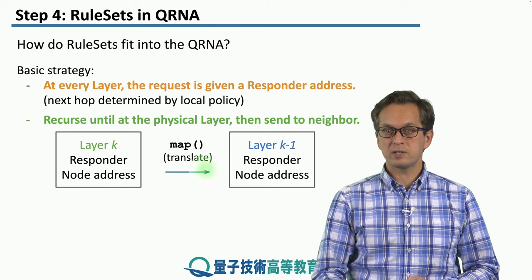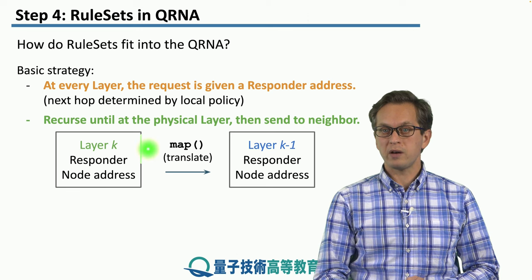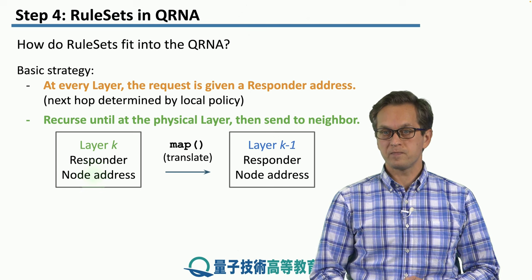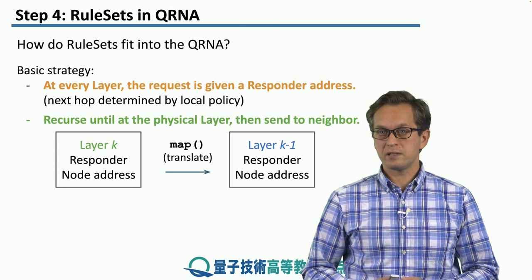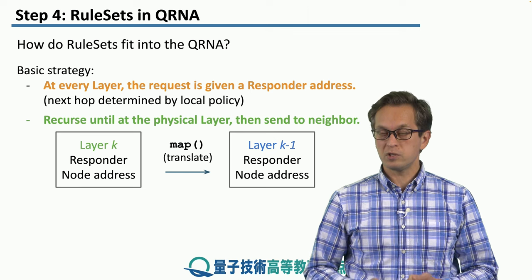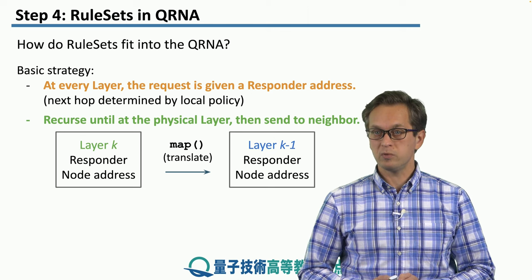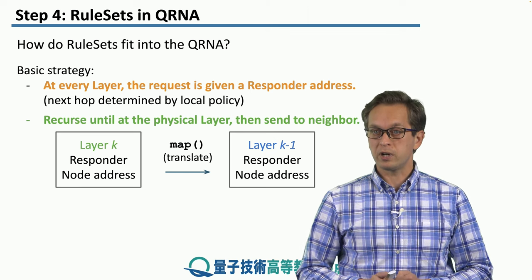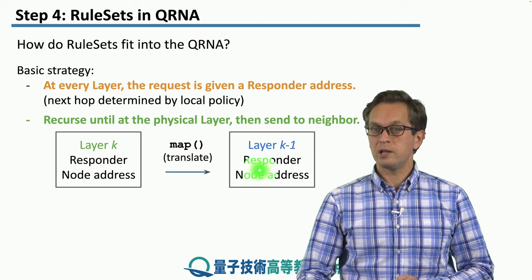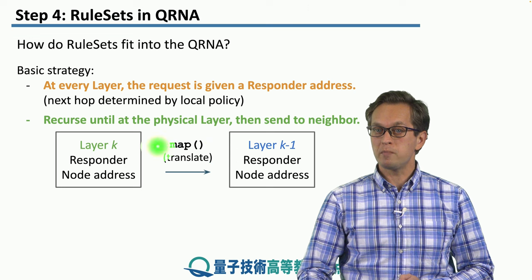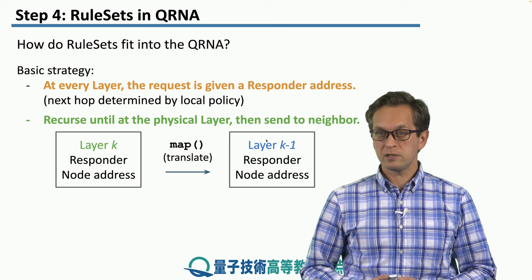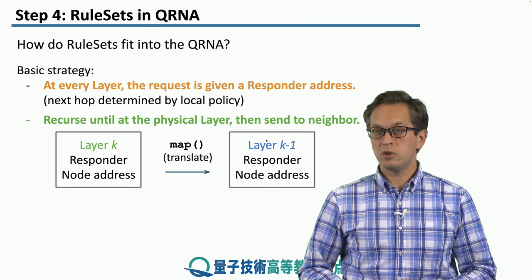So here we start at layer K, where we have the responder address and the current node address. Those addresses must be translated using the map function, which we introduced in step two when talking about recursive classical networks. We recurse into layer K minus one, where the map function produces a new responder address and a new node address.